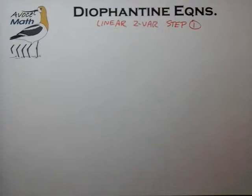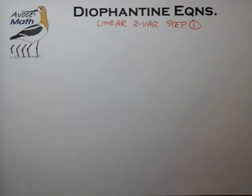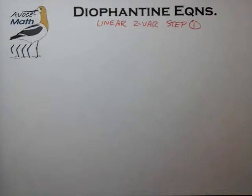Hello and welcome back to Avocet Math for part two of our multi-part series on the linear two-variable Diophantine equation. We're on to step one in our example equation, where we've basically taken the original Diophantine equation and made the constant term on the right side of the equation zero.